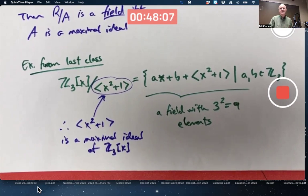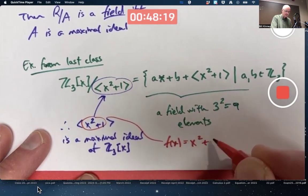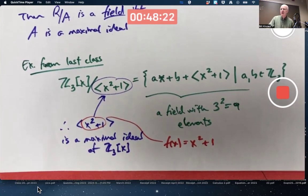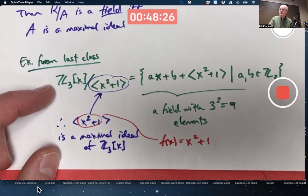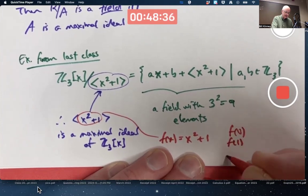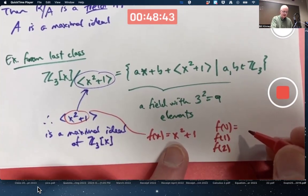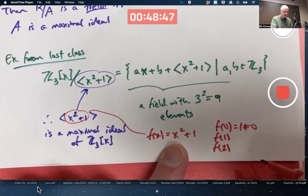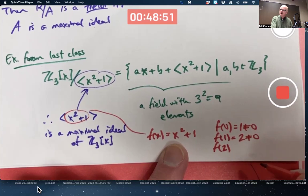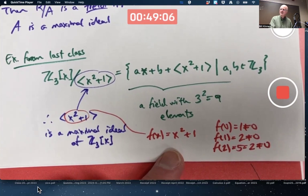A really big thing for us here this week and next week leading up to exam three is that this polynomial f(x) equals x squared plus 1 has no zeros in Z3, no roots. If you plug in the elements of Z3 into this polynomial 0, 1, and 2, what do you get? 0 squared plus 1 is 1, not 0. 1 squared plus 1 is 2, not 0. 2 squared plus 1 is 5, mod 3 is 2, not 0. This has no roots in Z3.